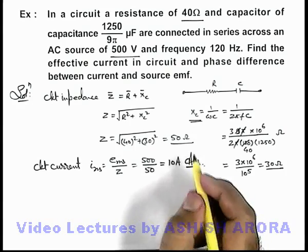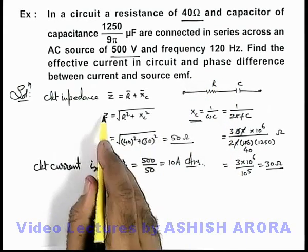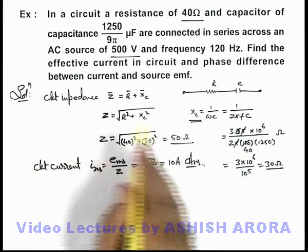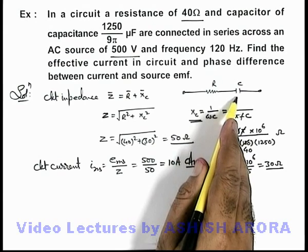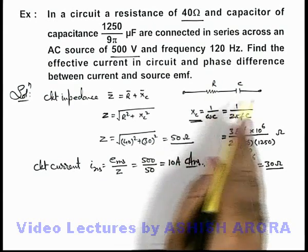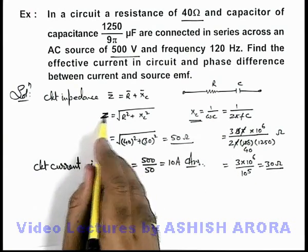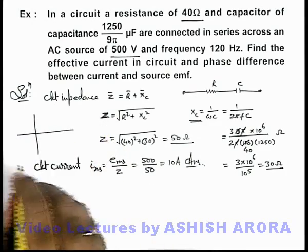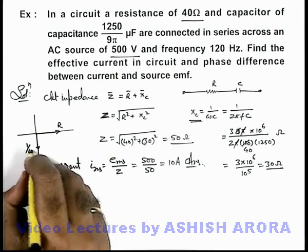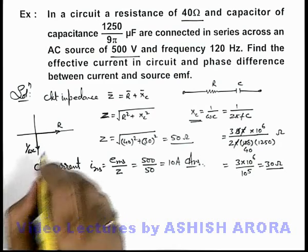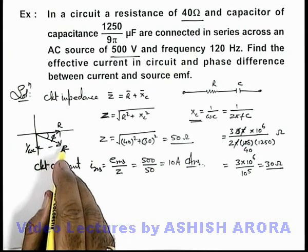We are also required to find the phase difference between the current and the source EMF. This corresponds to the phase of the impedance of the circuit. Since the overall impedance has a capacitive reactance component, the current will lead the potential difference across the series combination of R and C. The phase angle of the circuit impedance can be calculated from the phasor diagram, taking R along one axis and the 1/ωC phasor in the downward direction. This angle φ is the negative phase angle of the impedance.